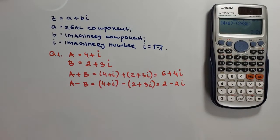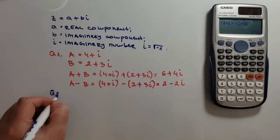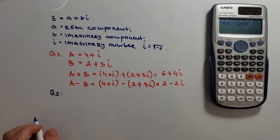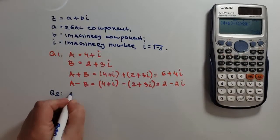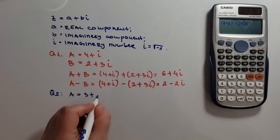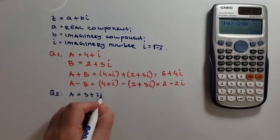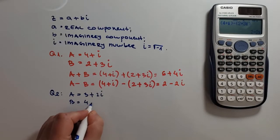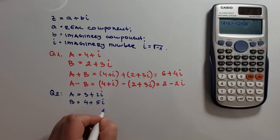Now, for the multiplication, here is another example. Multiply the two vectors defined as a is equal to 3 plus 2i, and b is equal to 4 plus 5i.